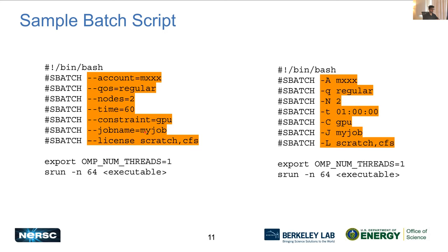After the Slurm directives, you add your job settings as you would in a typical bash script. For example, here I'm setting the number of OpenMP threads to one, and then the launcher command. You can use either format. There are many other options available — refer to the manual pages using 'man sbatch' on your terminal. You may need to tweak and optimize the script for the type of node you have.